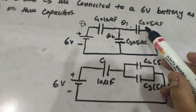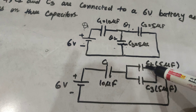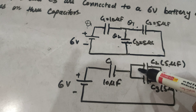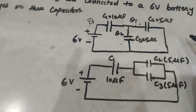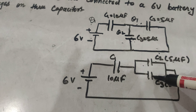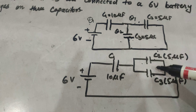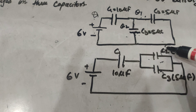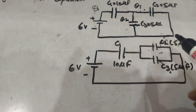So the simplified diagram will be like this: C2 and C3 are connected in parallel, and this parallel combination is in series with C1. To solve such a problem, firstly we solve this parallel combination using the formula C2 plus C3. The equivalent capacitance Cp equals C2 plus C3, which equals 10 microfarads.